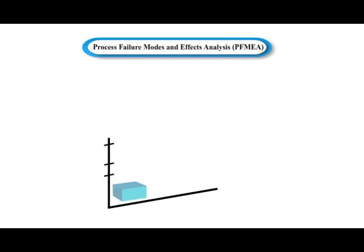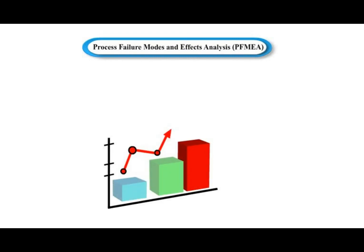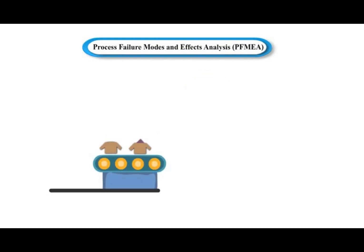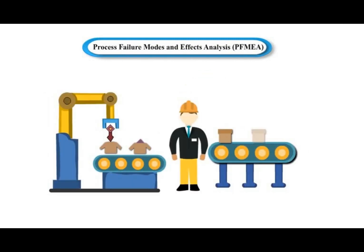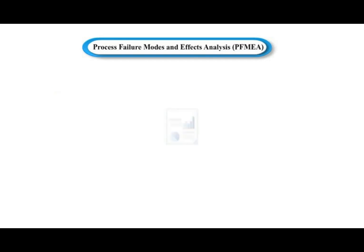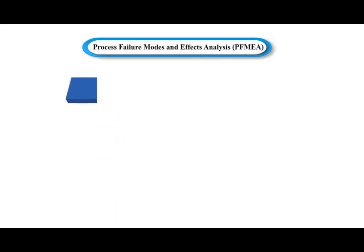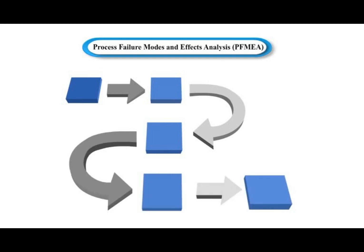Process Failure Mode and Effects Analysis is used to analyze manufacturing and/or assembly processes. Process FMEA is probably the most commonly used and is also the least complex in most cases. Let's understand the process FMEA with the help of an example.